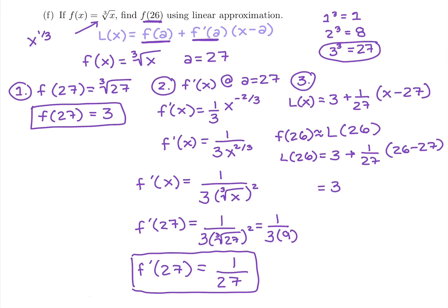So we get 3 plus 1 over 27 times negative 1. So 3 minus 1 over 27.